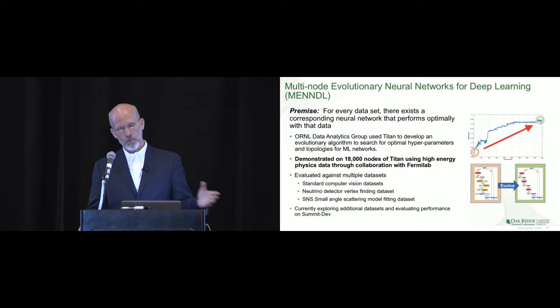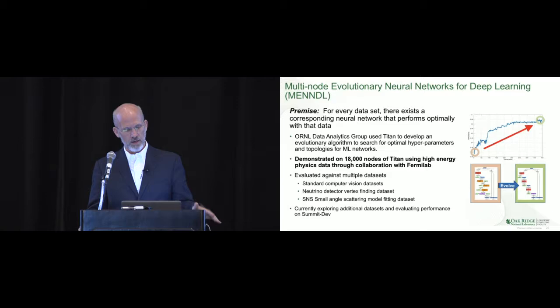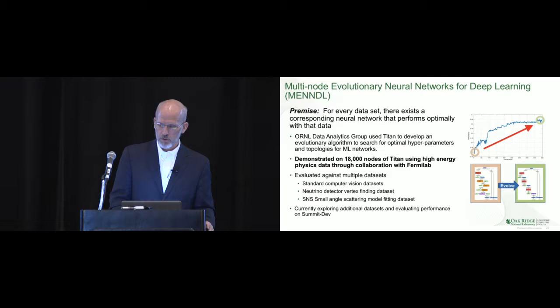They demonstrated on Titan, using all of the resource, that the classification of high energy physics data from the MINERvA experiment could be improved. This same technique has been evaluated on multiple diverse data sets, like standard computer vision data sets and data from the Spallation Neutron Source small angle scattering at Oak Ridge National Laboratory. This is now being ported to Summit to do even bigger problems.